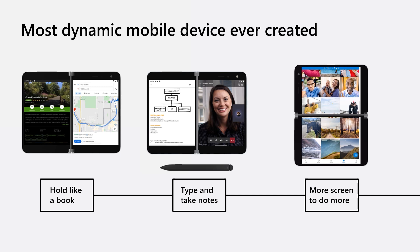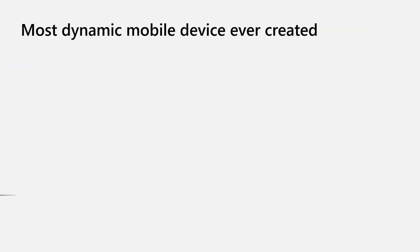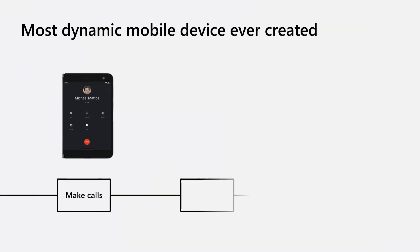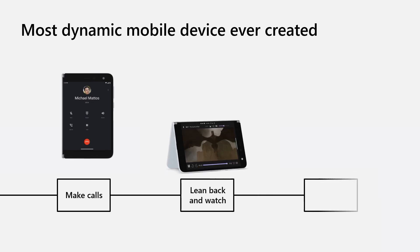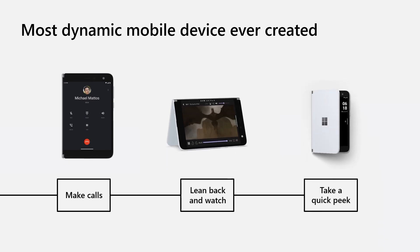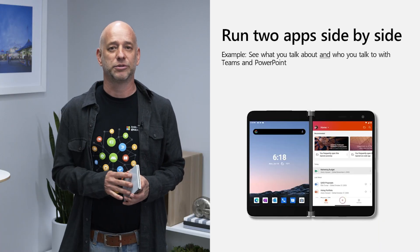The device also supports pen and note-taking to help you be productive. When you're making a phone call, you can flip the device to one side only. And when you're watching a video or playing a game, the tent mode can come in handy. When the device is closed, you can pick it up and have a quick glance to see notifications or just the time of the day. We call this the peek mode.